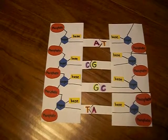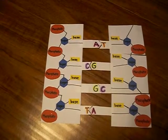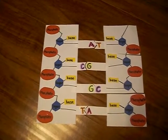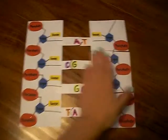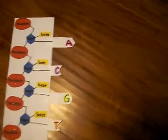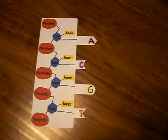Helicases are enzymes that untwist the double helix at the replication forks and separate the two DNA strands. It is found in the nucleus for DNA replication.